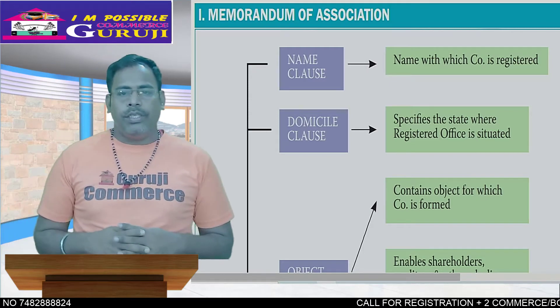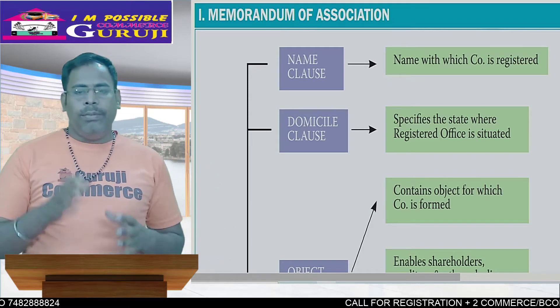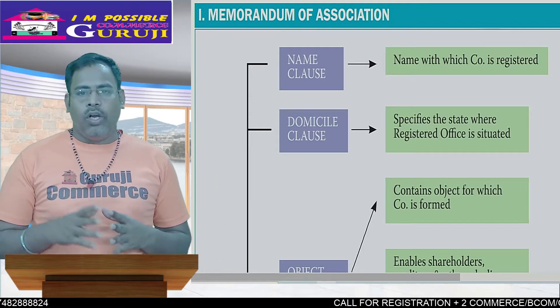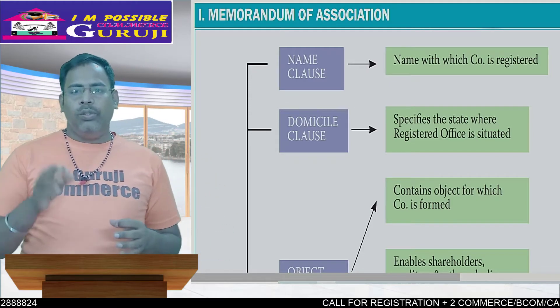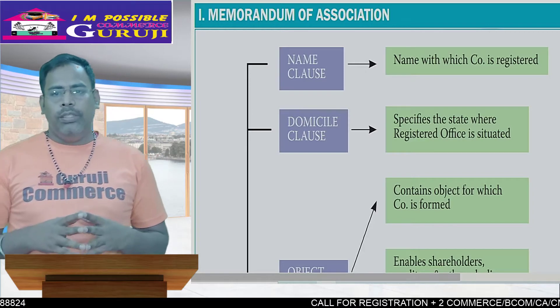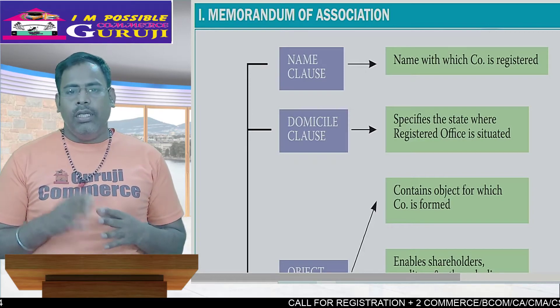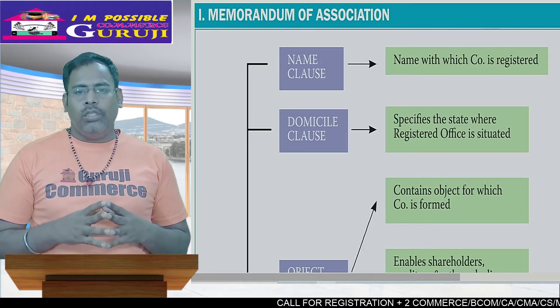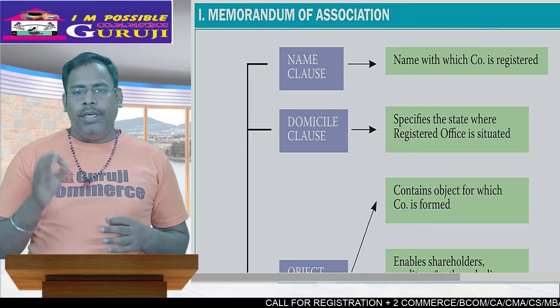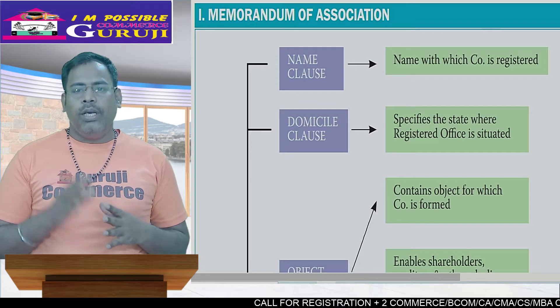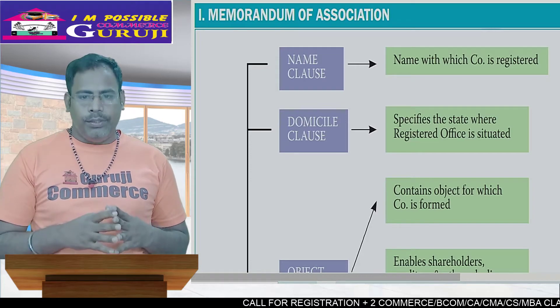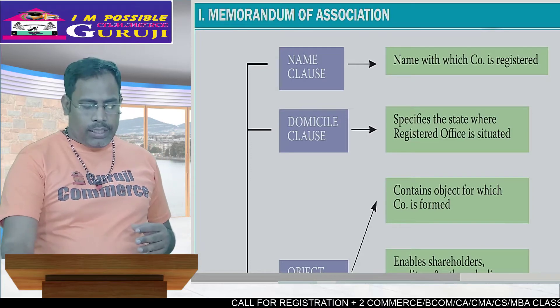Memorandum of Association Company — what are the different clauses? Name clause, which specifies which company is registered. Domicile clause means specifying the state where the company is registered or situated.